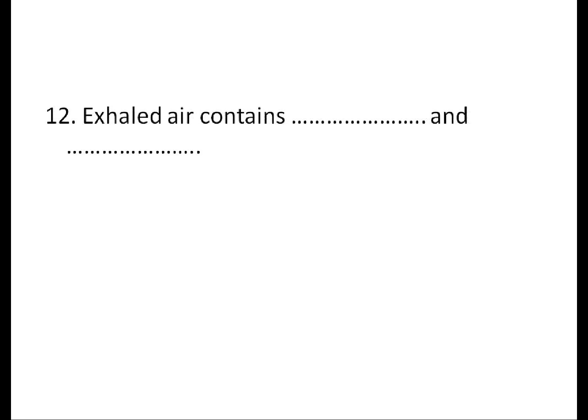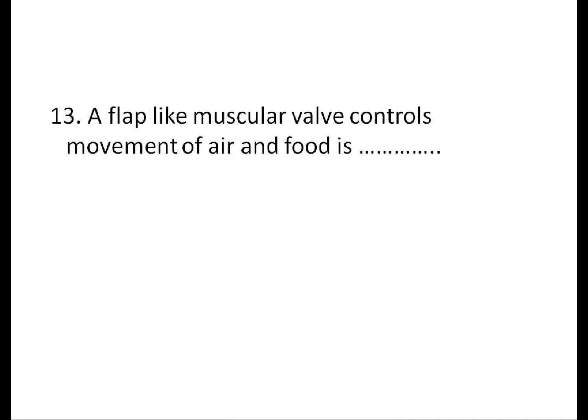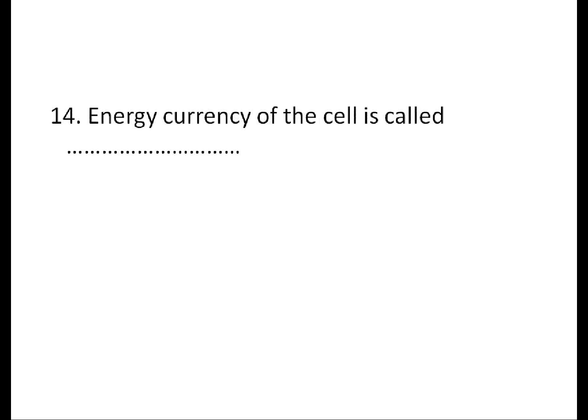It is known that a range of factors diffuse in the air. In the water wash, a branch filled with air contains carbon dioxide and water vapor. A flap-like muscular valve that controls the movement of air and food is the epiglottis. The energy currency of the cell is called ATP.